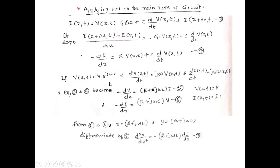If voltage is a phasor of the form V(Z,T) = V·e^(jωt), then differentiating gives d/dt = jω. Substituting into equations 2 and 4, we get: −dV/dZ = (R + jωL)·I, and −dI/dZ = (G + jωC)·V, as equations 5 and 6. From these, we define Z = R + jωL and Y = G + jωC.